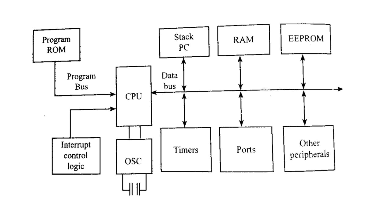The figure shows the architecture of the PIC 18 microcontroller. The architecture contains EEPROM, RAM, other peripherals, ports, timers, stack PC, interrupt control logic, program ROM, CPU, oscillator, internal data bus, and program bus.